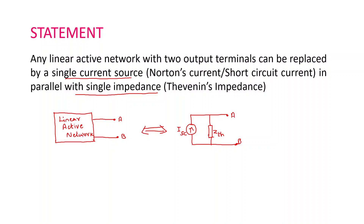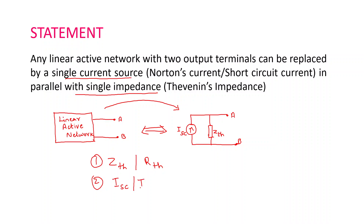Given a linear active network with two terminals where you are going to connect your load, you can find an equivalent Norton's circuit by finding two elements. One is the Thevenin's impedance — or in DC circuits it is called Thevenin's resistance — and the short circuit current, also called Norton's current. If we find these two elements and put them in parallel, we get an equivalent circuit for the given active network.